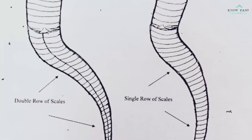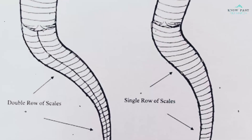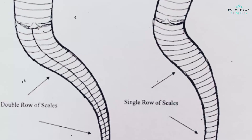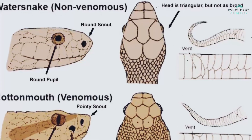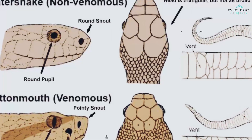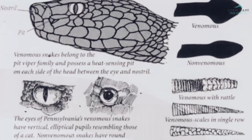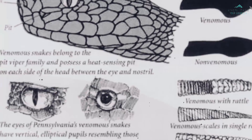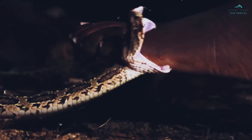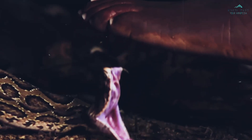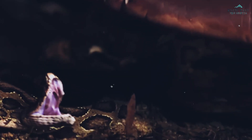These were all the characteristics we found helpful in differentiating between venomous and non-venomous snakes. If you have any additional insights or unique methods to make this distinction, do share them in the comments below.